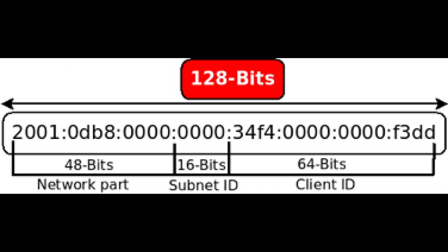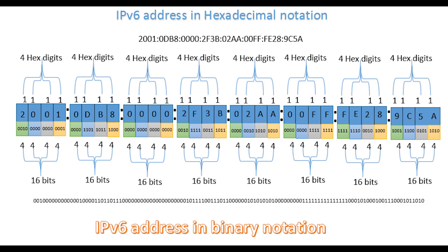This video is on IPv6 concepts. Let's first look at the IPv6 address. An IPv6 address consists of 128 binary bits. These bits are divided into 8 16-bit segments, and each 16-bit segment is converted into a 4-digit hexadecimal number and separated by a colon.